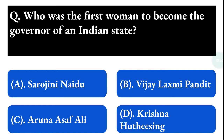Next question: who among the following defeated Harsha Vardhana? Option A: Alexander, option B: Vasumitra, option C: Pulakesi II, option D: Chandragupta I. The correct answer is option C, that is Pulakesi II.